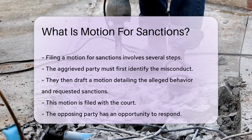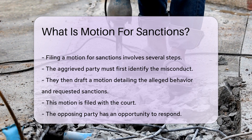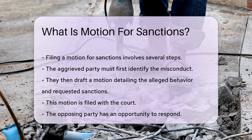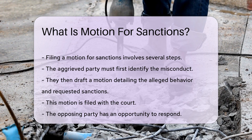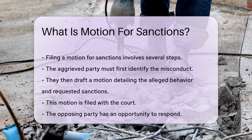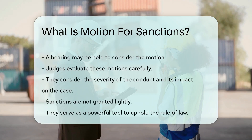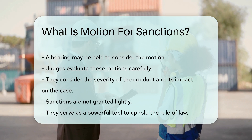Filing a motion for sanctions involves several steps. First, the aggrieved party must identify the misconduct. Next, they draft a motion detailing the alleged behavior and requested sanctions. This motion is then filed with the court. The opposing party has an opportunity to respond. A hearing may be held to consider the motion.